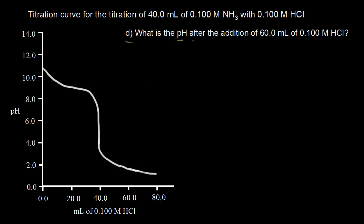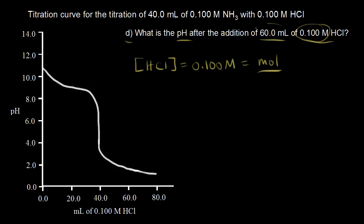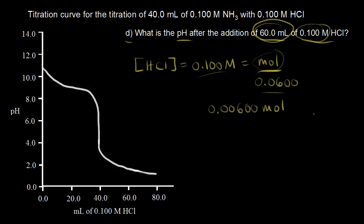In part D, our goal is to find the pH after adding 60 milliliters of our 0.1 molar HCl. How many moles of acid have we added? Concentration is 0.1 molar and we're adding 60 mL = 0.06 liters. So moles of HCl = 0.1 × 0.06 = 0.006 moles of HCl, which gives 0.006 moles of H⁺ or H₃O⁺.